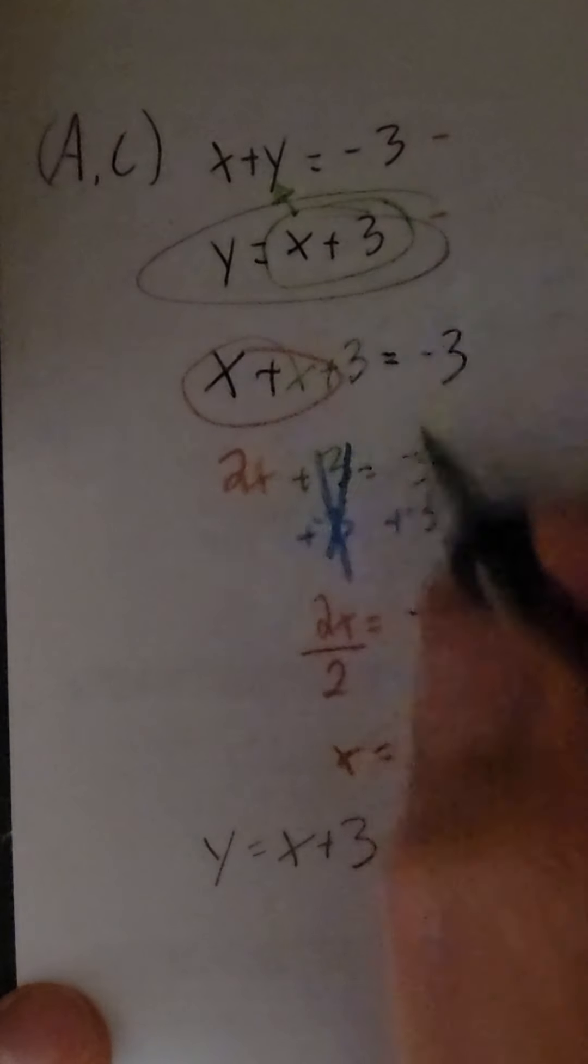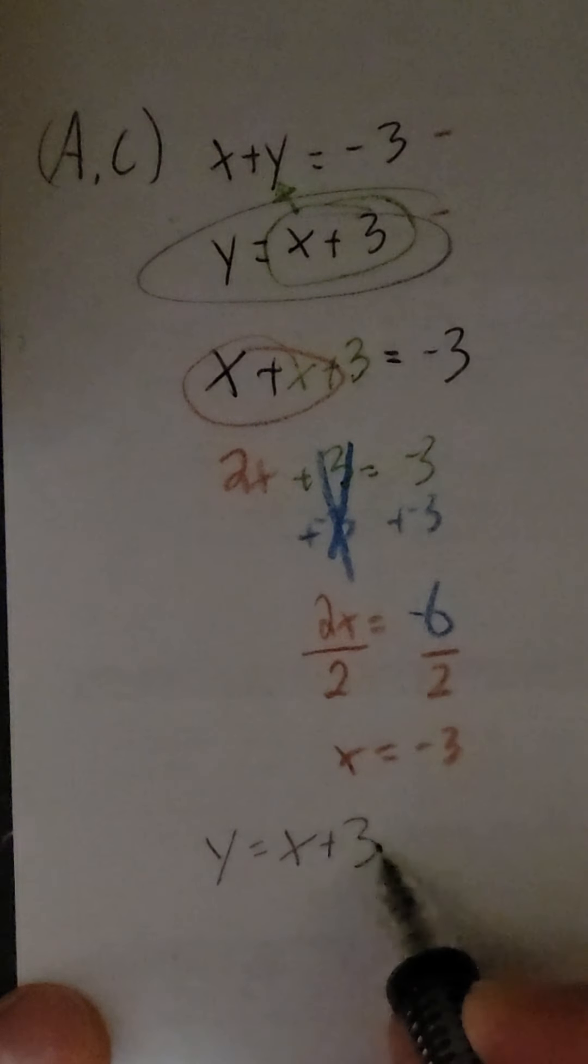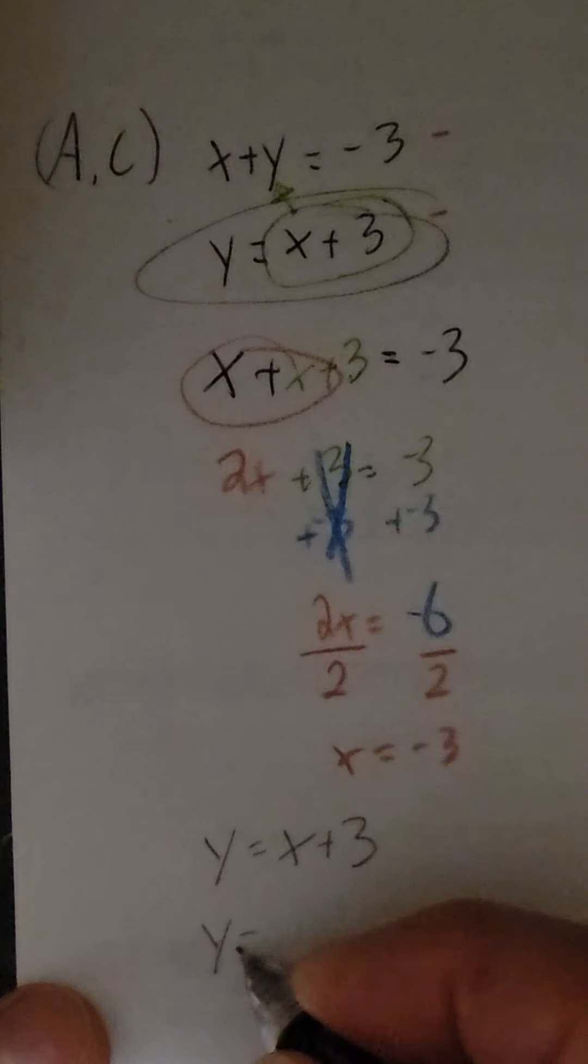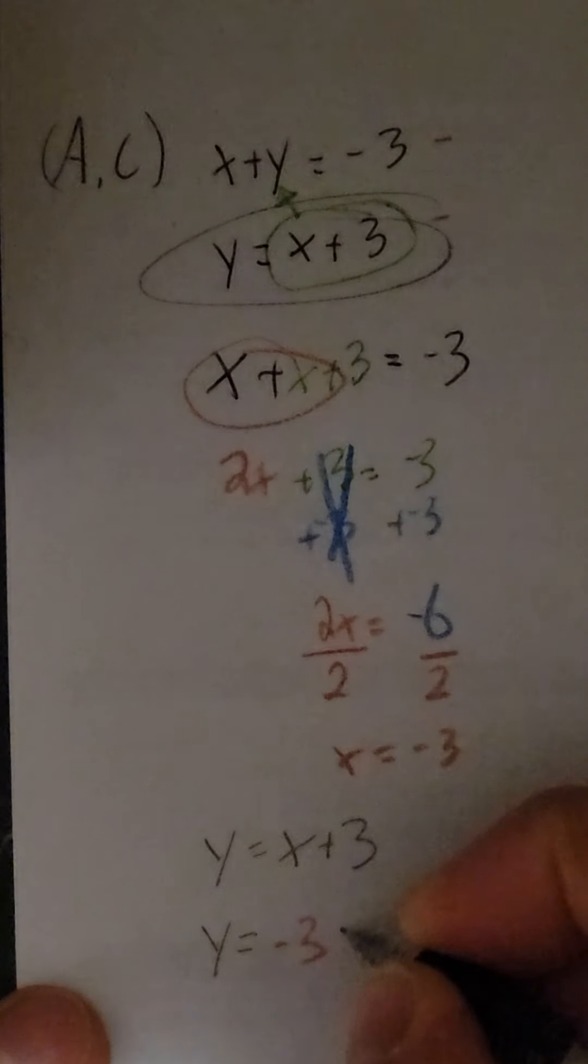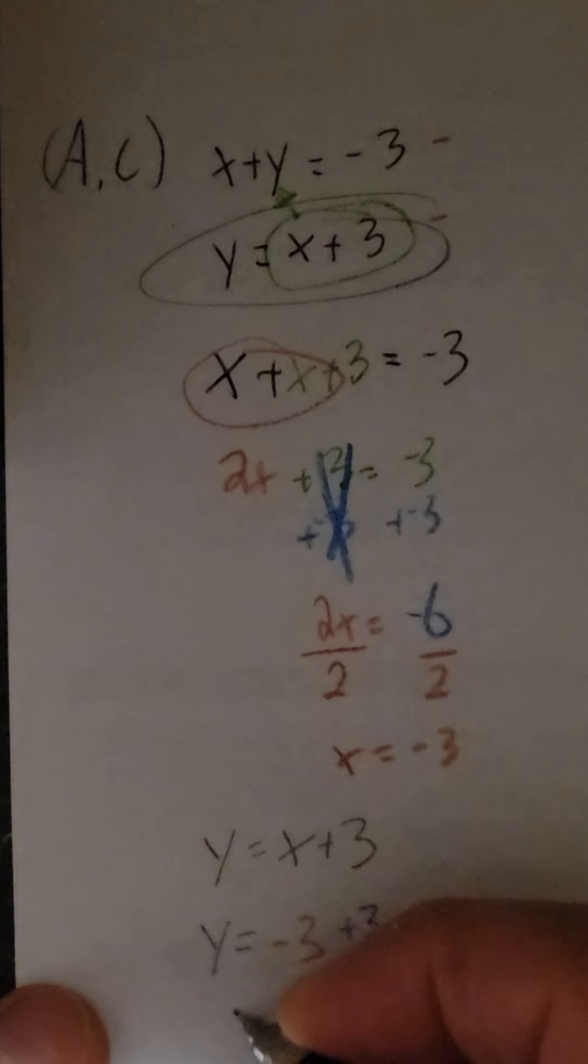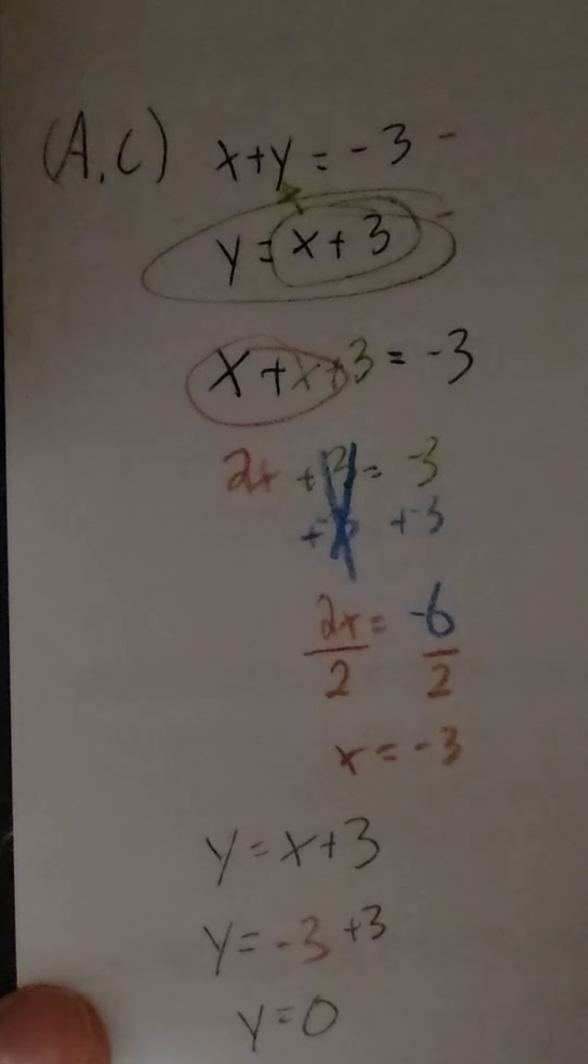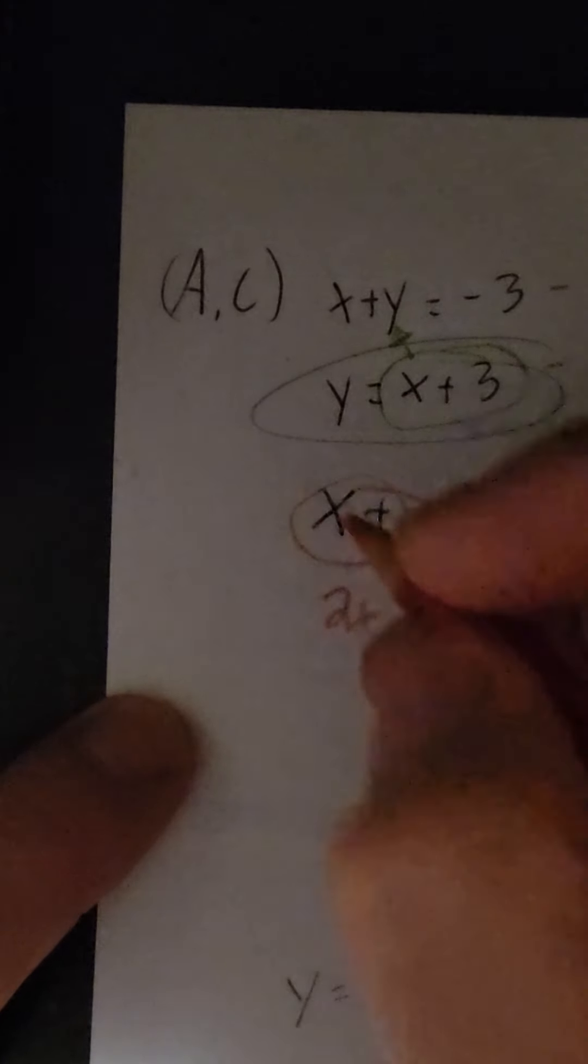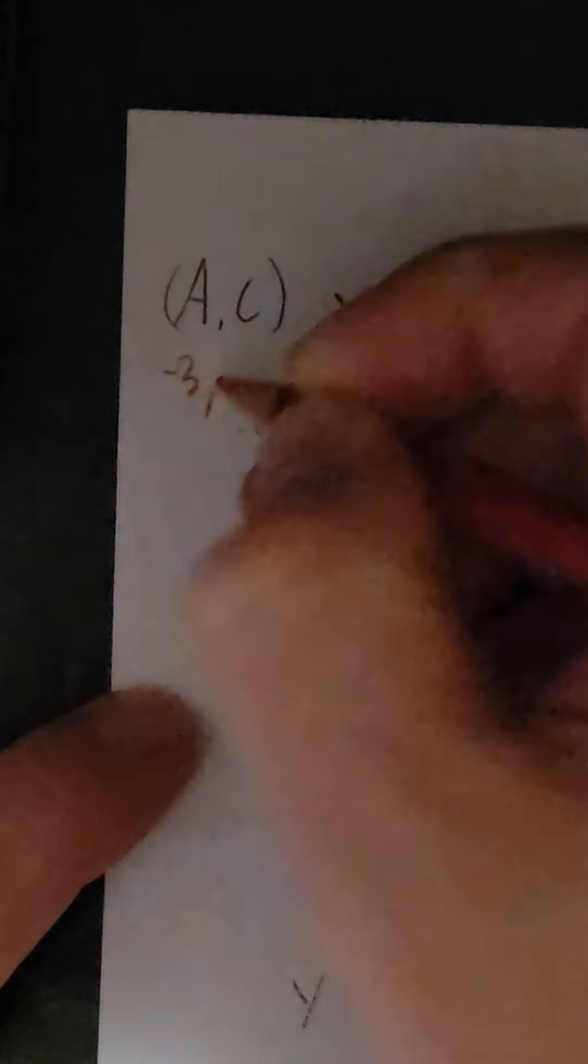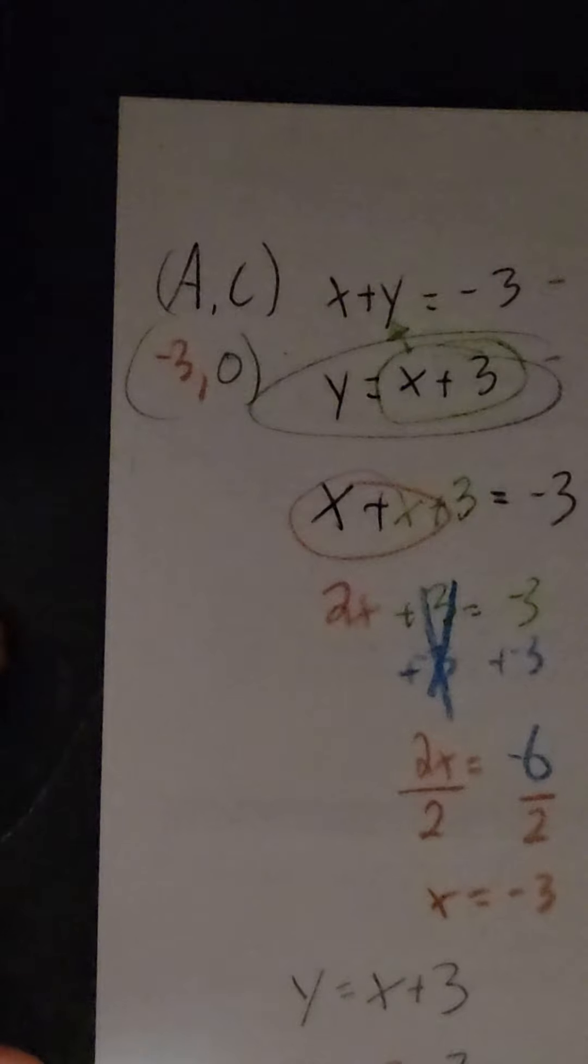So please write on in that original equation, y equals x plus 3. So then y equals our x value, it's negative 3 plus 3. So y is going to equal 0. Now when you put that together, your answer then up here is going to be negative 3 for your x value and 0 for your y value.